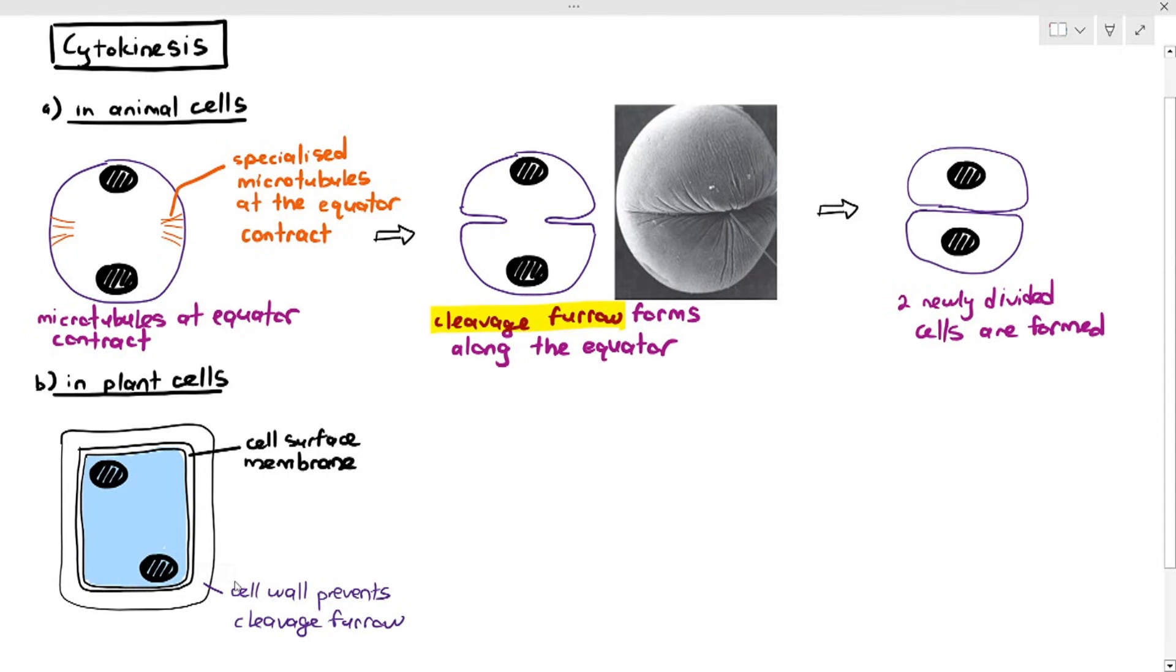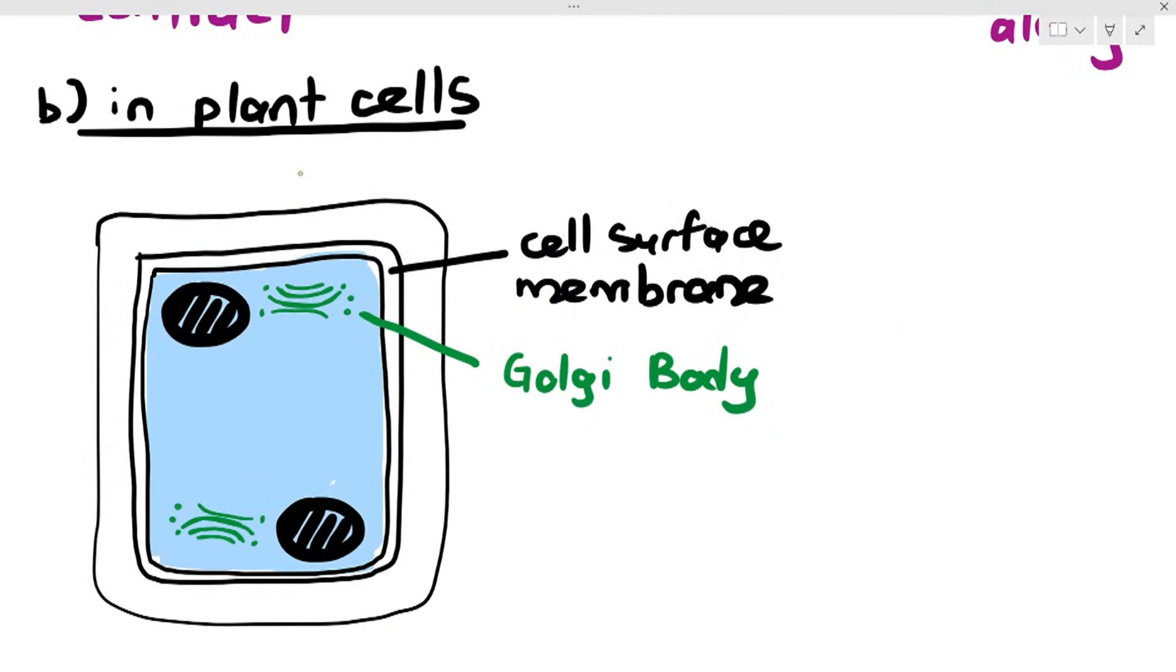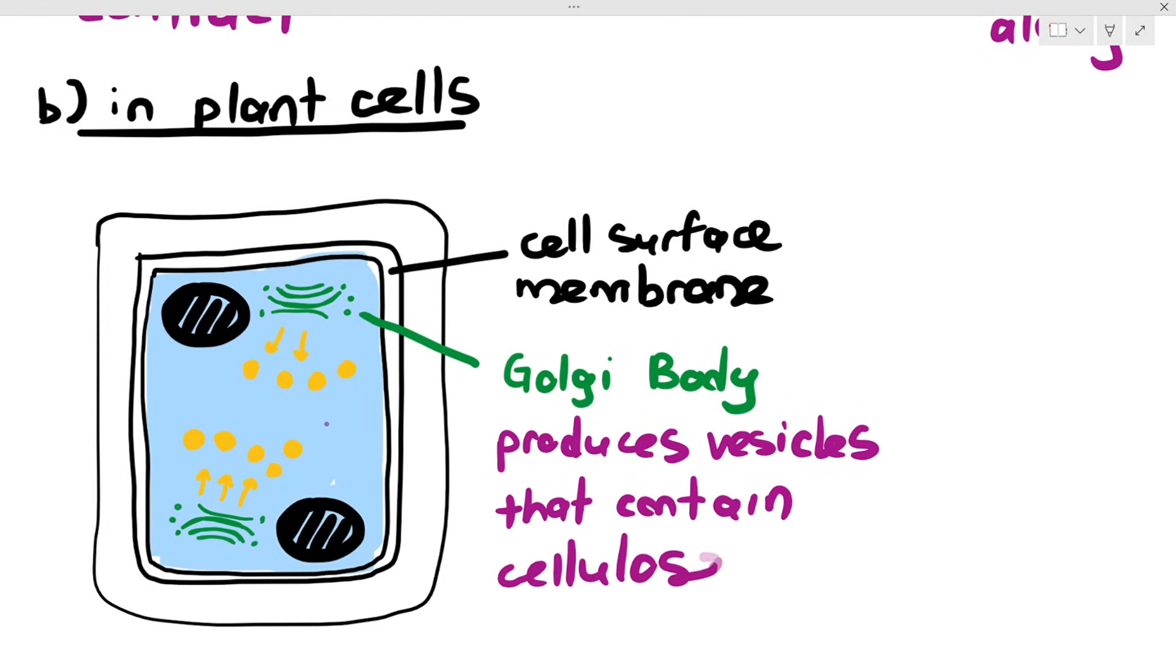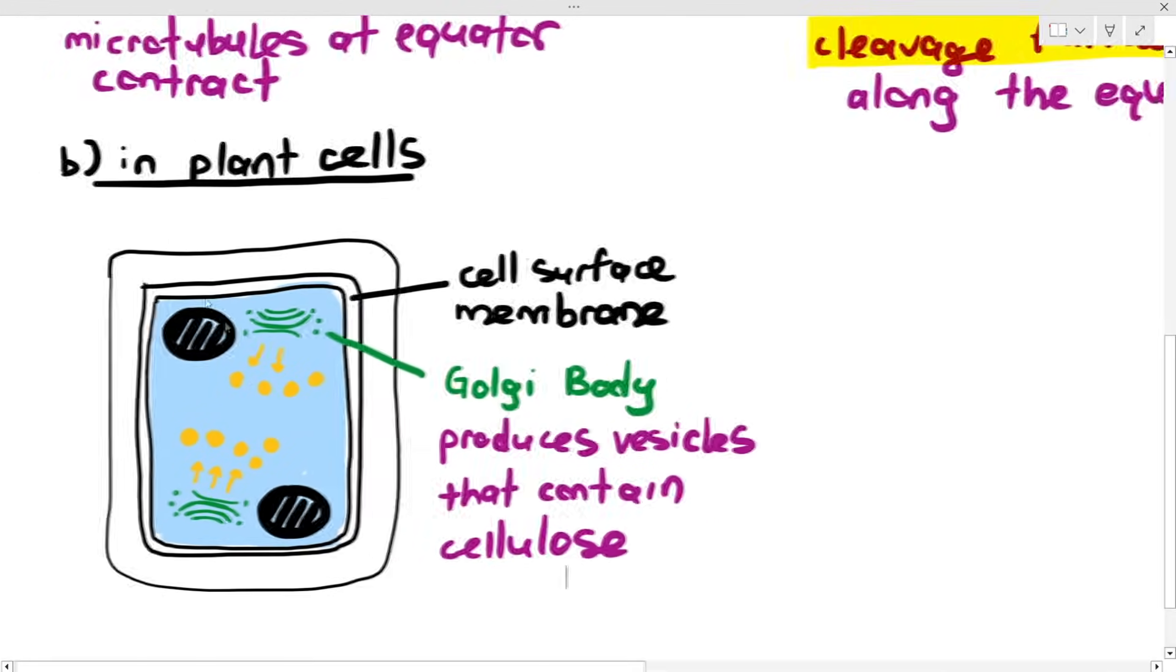For the plant cells, they will have Golgi bodies or Golgi apparatus on opposite poles. The Golgi apparatus will package cellulose into vesicles. The yellow colored bubbles are vesicles and they will put cellulose into the vesicles.